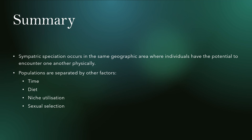But eventually they would diverge through things like random genetic drift, sexual selection pressures, and other evolutionary forces. In summary, sympatric speciation occurs in the same geographic area where individuals have the potential to encounter one another physically, but because of some other effect — timing, diet, niche utilization, or sexual selection — they don't share genetic material, they're not mating, and so the opportunity exists for the two populations to diverge genetically and eventually speciate into two distinct species.